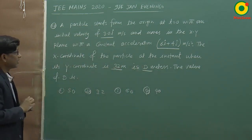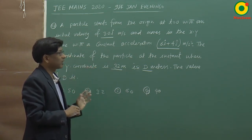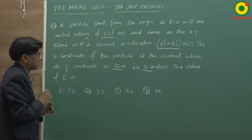Question ka matlab ye hai ki jis instant per y coordinate 32 hai, us instant per x coordinate kya hoga, woh hamein batana hai.